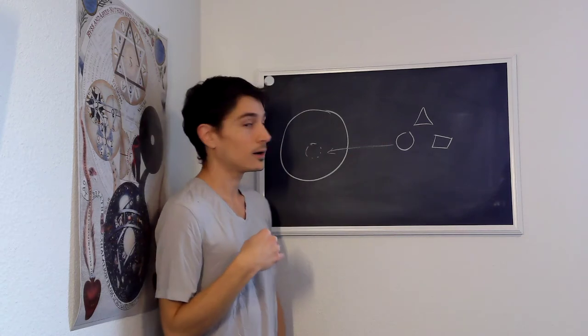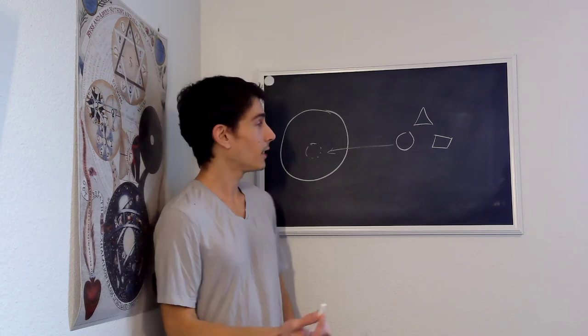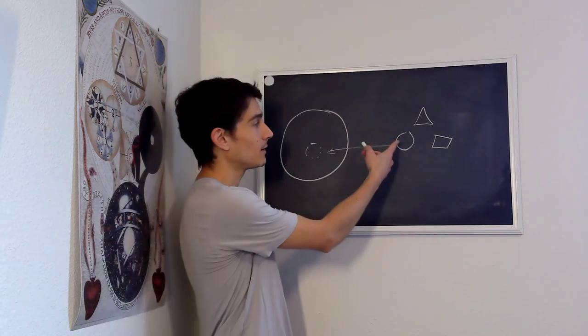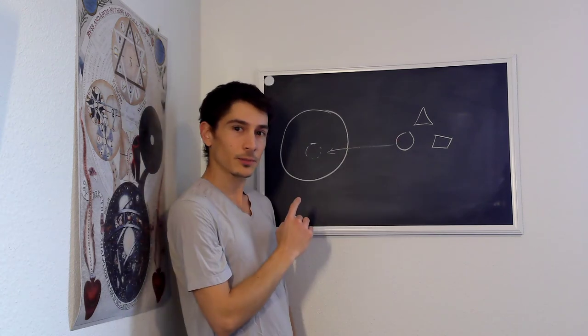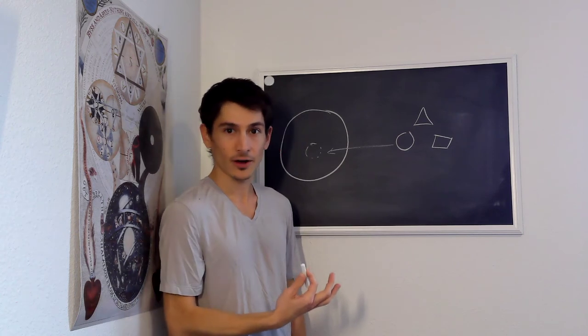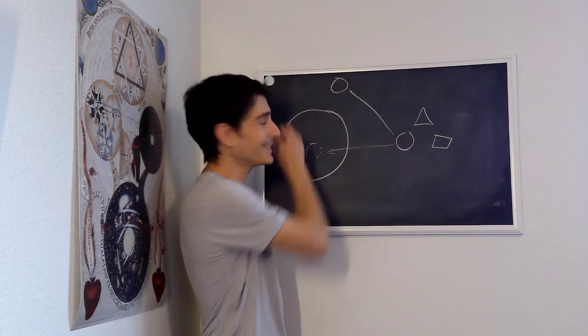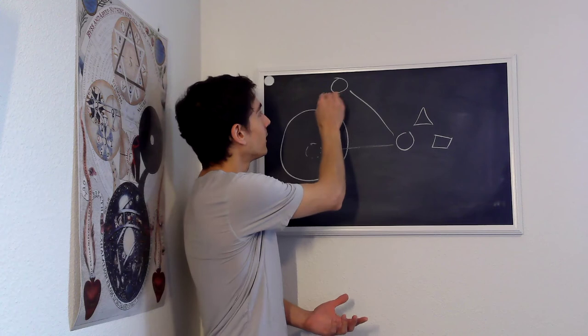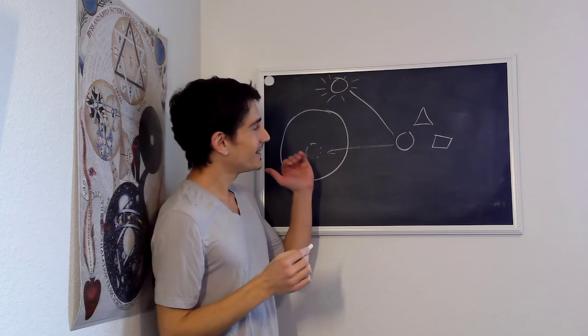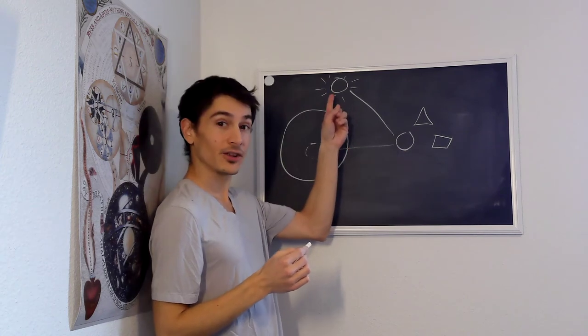The pre-Kantian rationalists had a very different idea of ideas and how we come to have knowledge of objects in the world. They would say that actually, these sensory objects that appear to be out there in the world are really pale imitations of eternal forms that exist in some kind of platonic heaven. So there's this numinous form up here, and the form of the sensory object gains its reality through participation in that form.